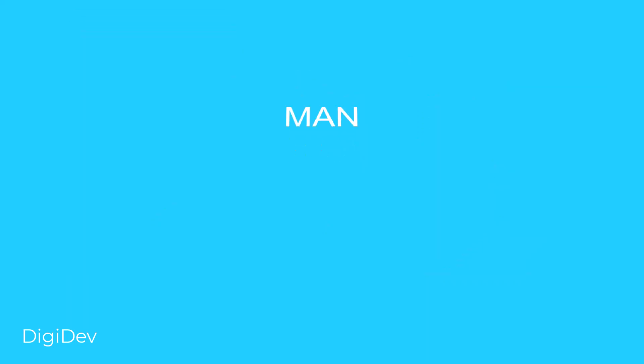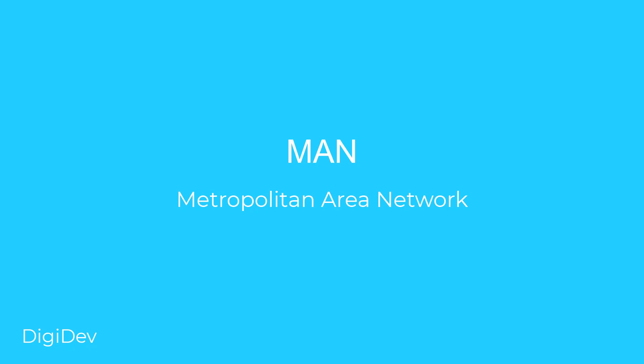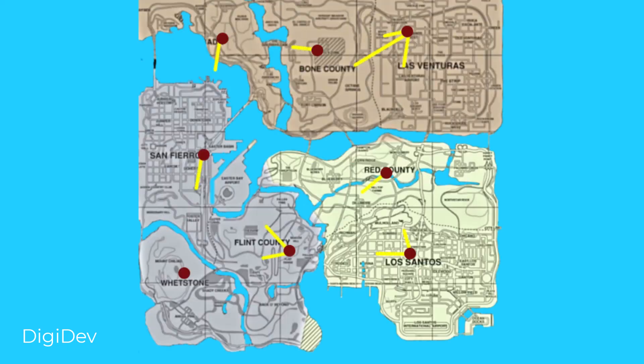The next type is MAN, which stands for Metropolitan Area Network. It is when things get bigger — for example, the connection between two cities or multiple cities.